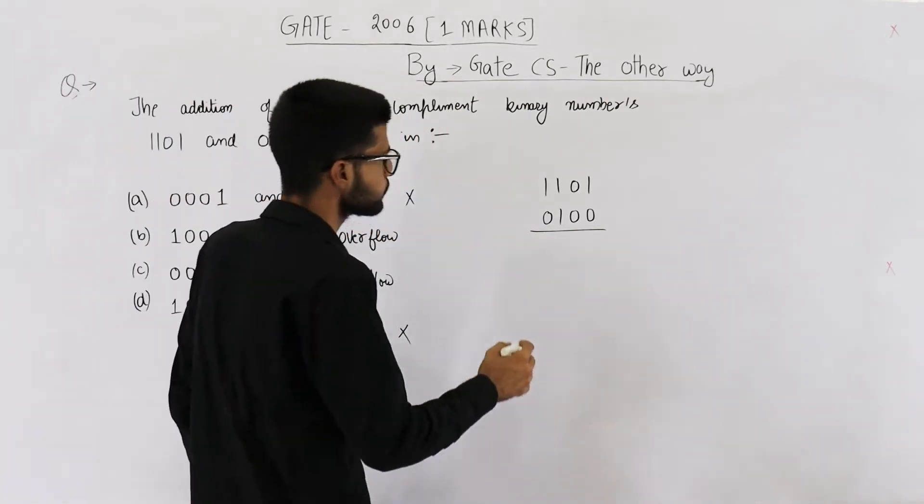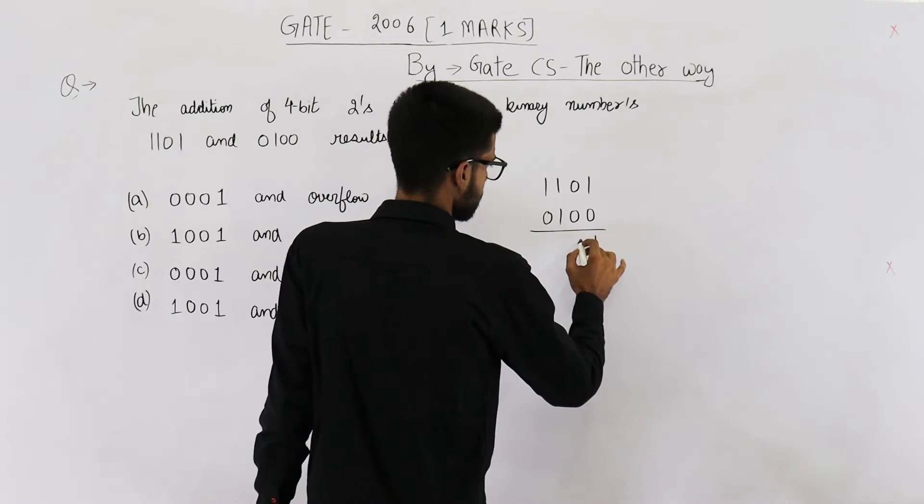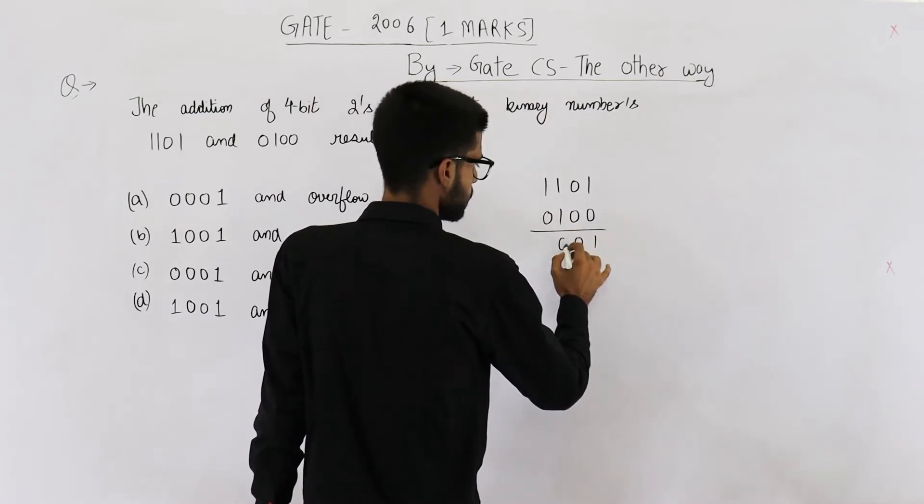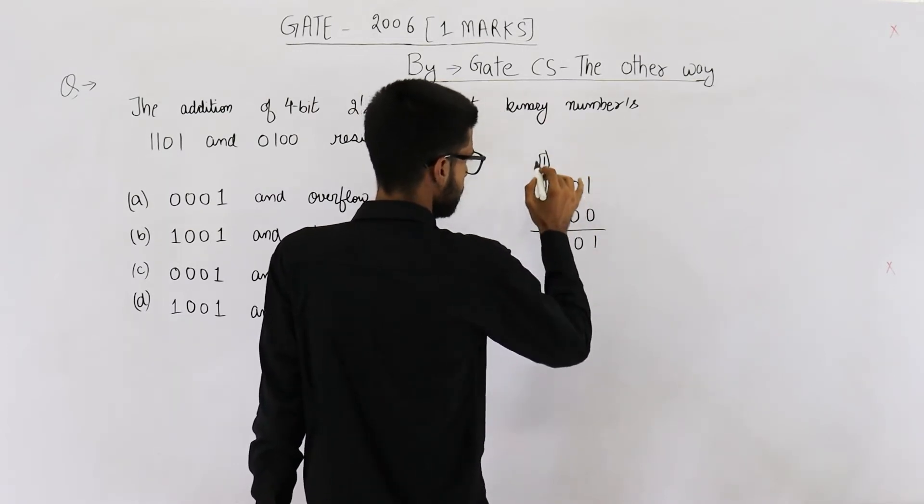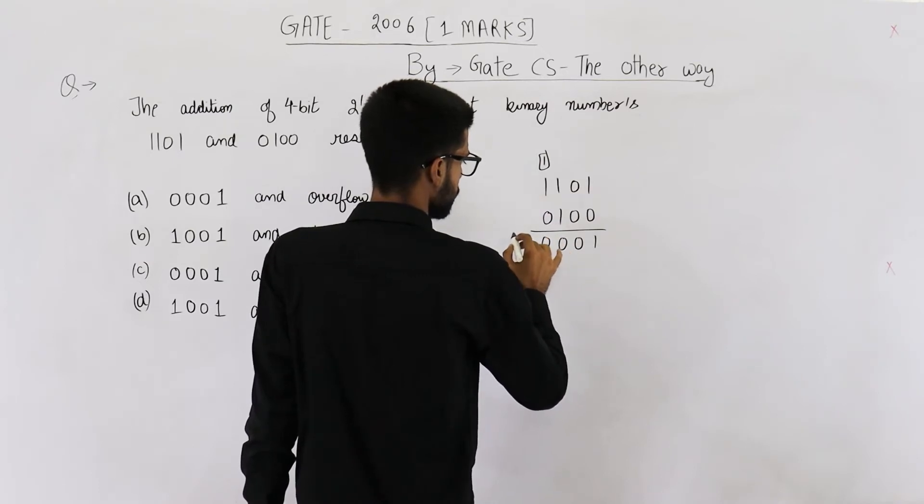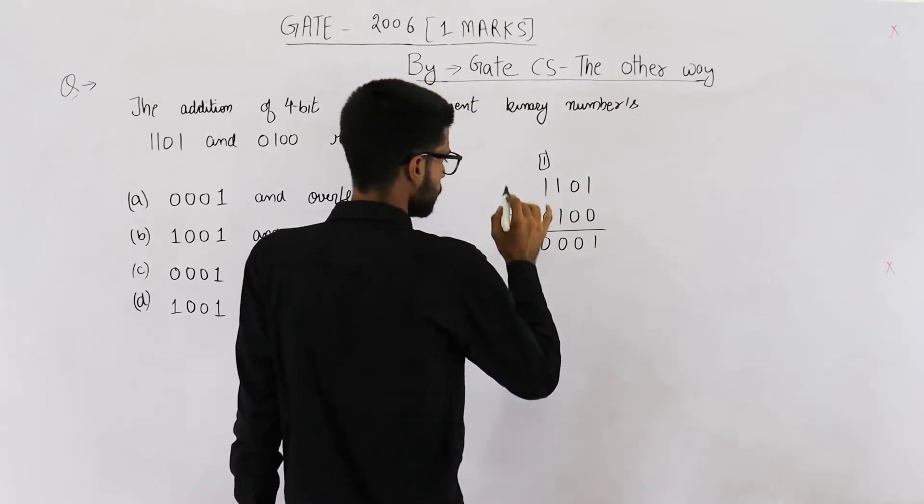Now let us add these two. 1 plus 0 is 1, 0 plus 0 is 0, 1 plus 1 is 0 with 1 carry, and 1 plus 1 is 0 with 1 carry.